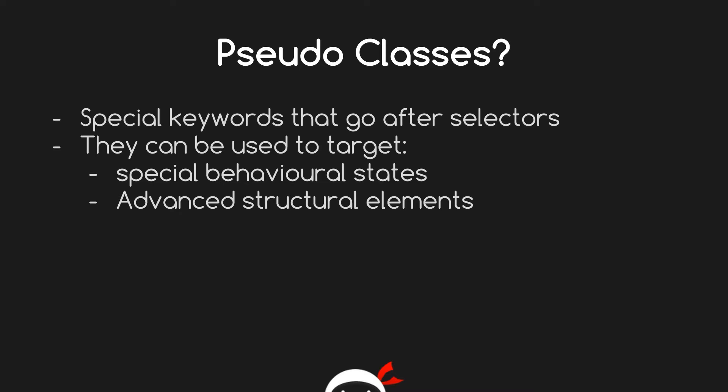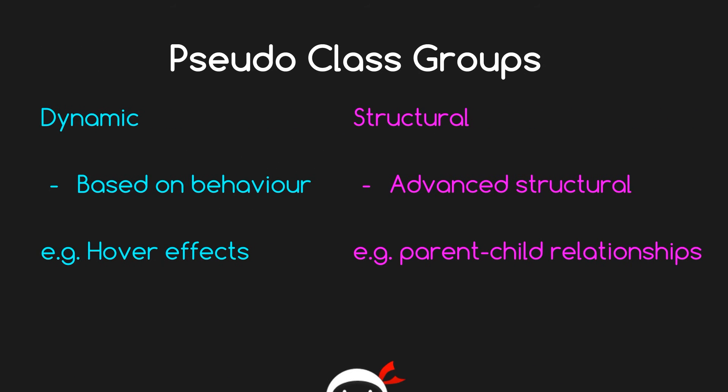Or advanced structural elements. There are two groups: dynamic and structural. Strictly speaking, not all pseudo classes fit into one of these groups, but most do. The dynamic group is based on behavior — for example, when someone hovers over a link on your website, does it change color? That's controlled by a dynamic pseudo class. The structural group is more to do with selecting advanced structural elements, things you wouldn't normally be able to do with normal CSS rules, like complex parent-child relationships.